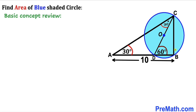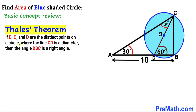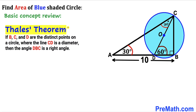Now let's focus on angle DBC. We are not sure what kind of angle this is, so let's recall Thales' theorem. According to this theorem, if B, C, and D are three distinct points on a circle where line CD is the diameter, then angle DBC is a right angle — in other words, 90 degrees. Since points B, C, and D are on the circle, angle DBC is 90 degrees, meaning triangle ABC is a right triangle.